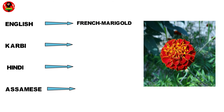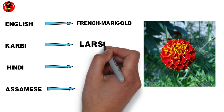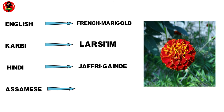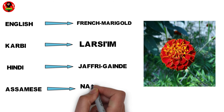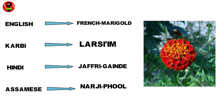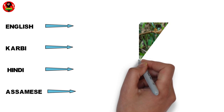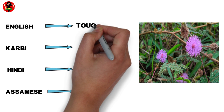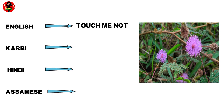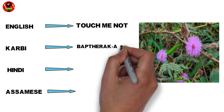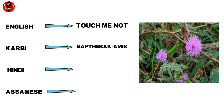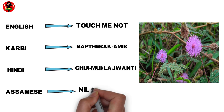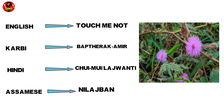Friends, Marigold, Larsiem, Jafri, Gende, Narji Pool, Tadz Minot, Bat Kedak, Amir, Chui, Mui, or Larswenti, Ni Lasban.